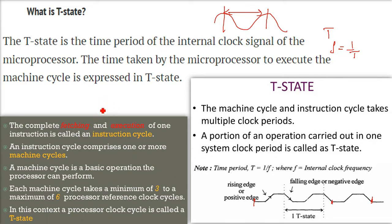In order to complete any instruction to work, the fetching and execution of instruction will be done. This is called an instruction cycle. This instruction cycle can have multiple machine cycles. And machine cycle is actually a basic operation that the processor has to perform. Each machine cycle will take a minimum of three to a maximum of six processor reference clock cycles.